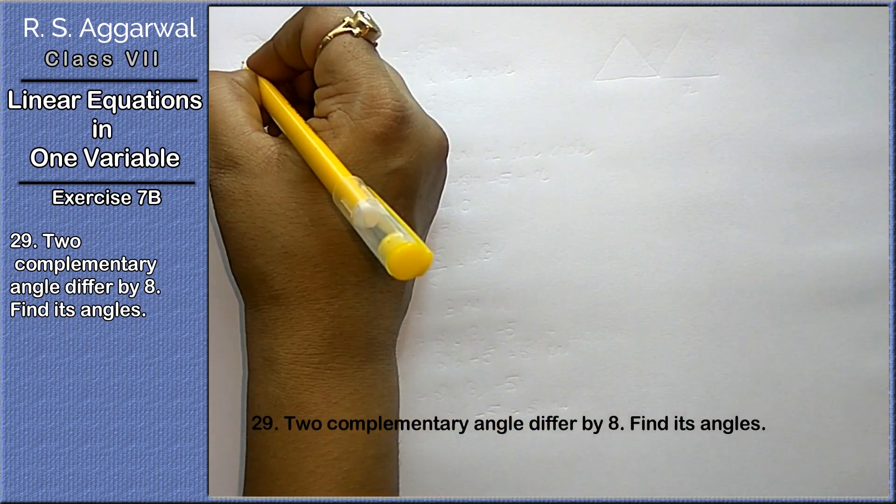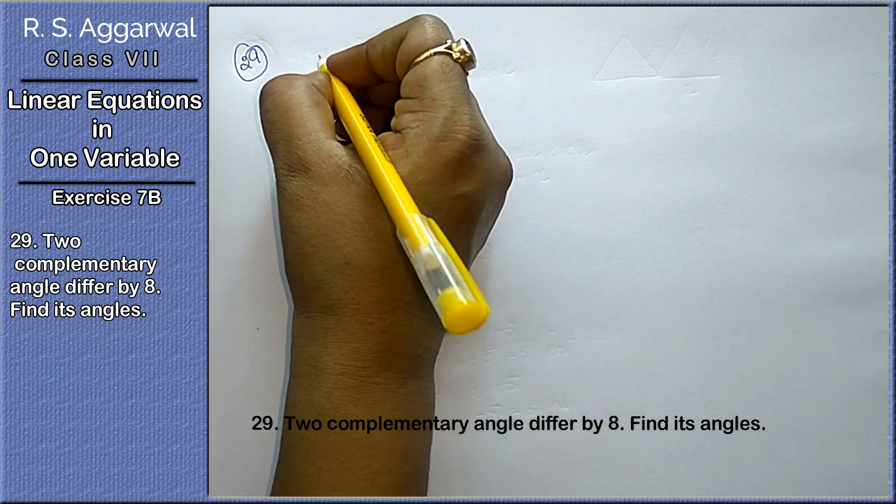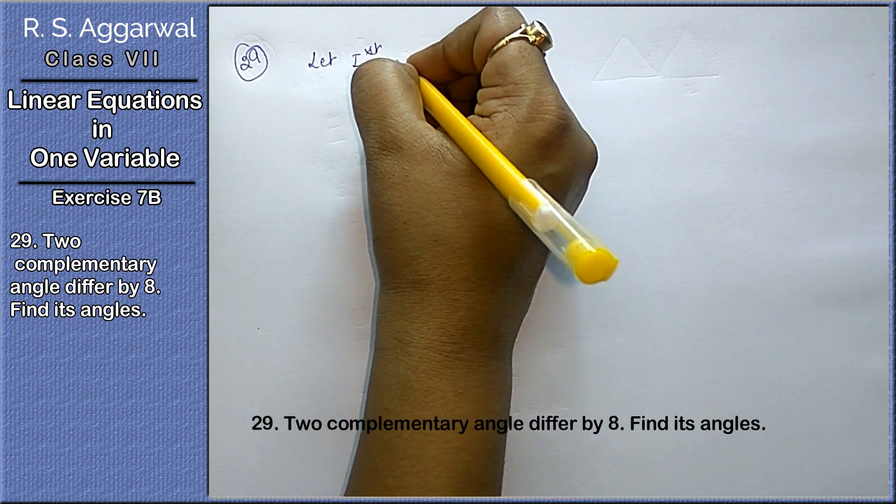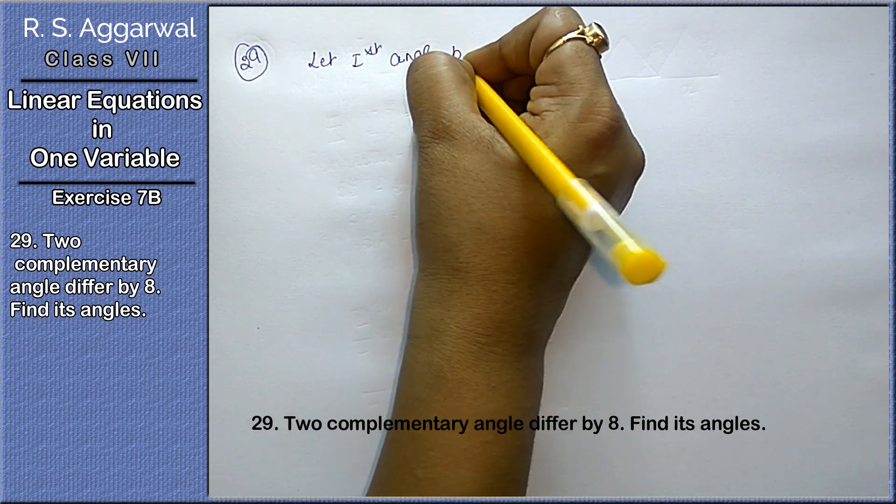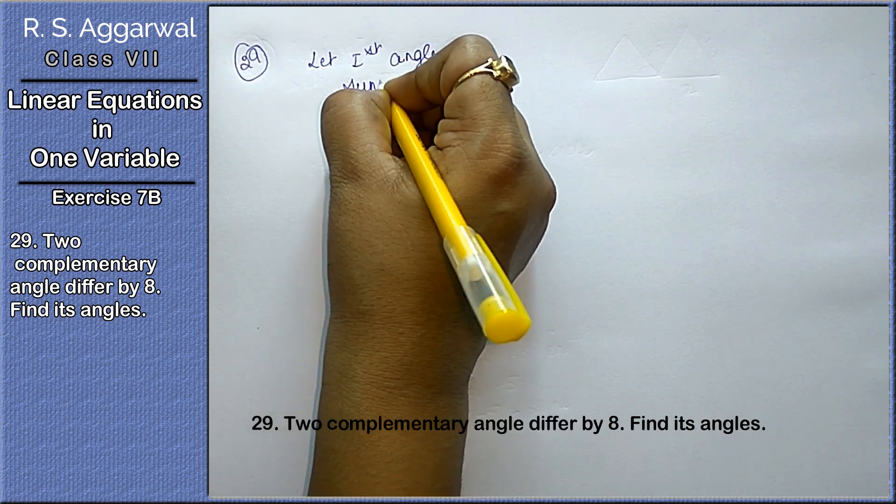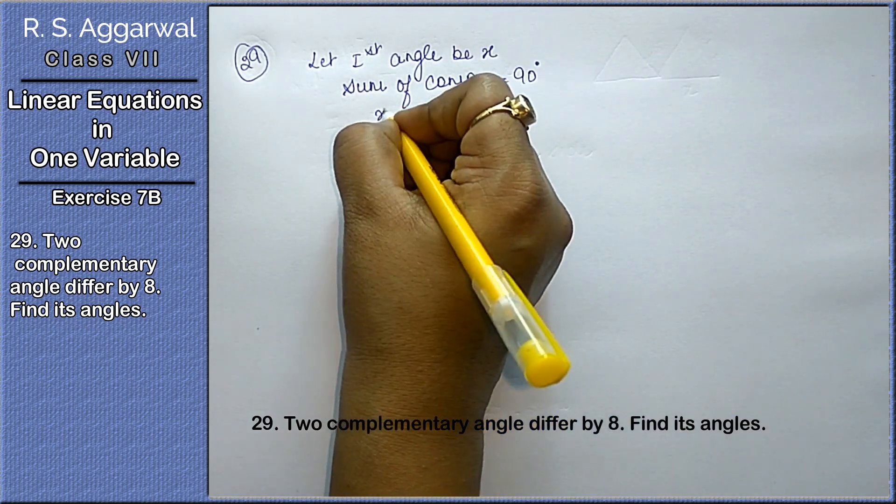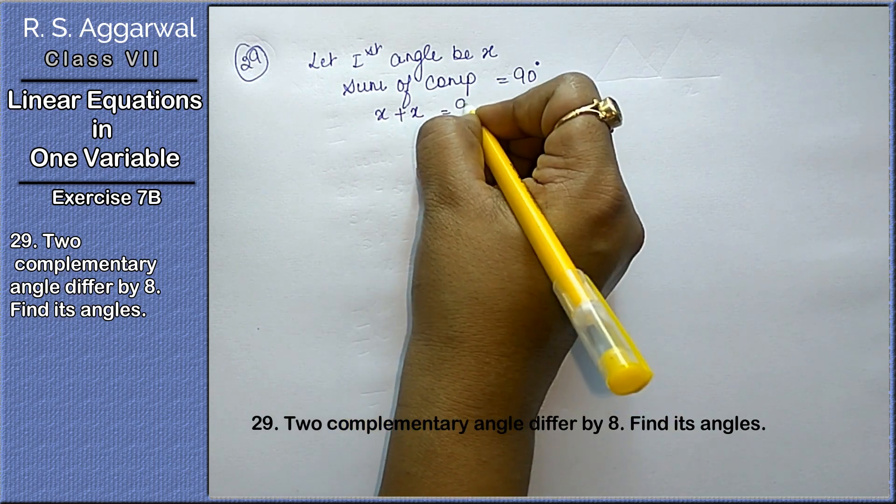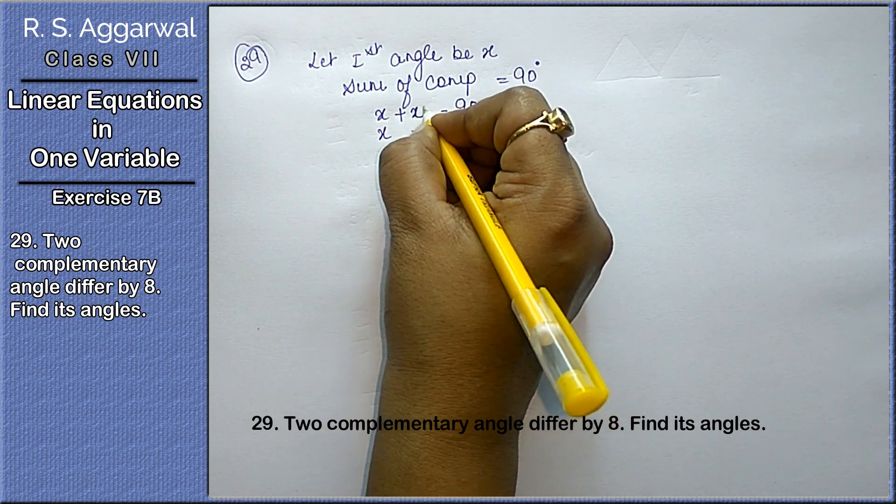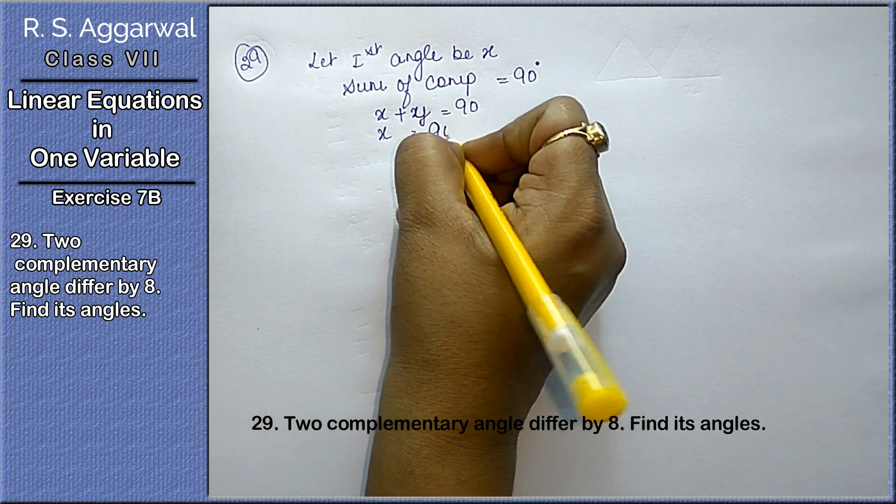The 29th question is, two complementary angles differ by 8. Find the angle. Let the angle be x. As we all know that friends, sum of complementary is 90 degrees. So if there is one x, then what will happen to the other? If there is one x plus y, two angles, it will be 90 degrees. So if there is one x, then the other is 90 minus x.